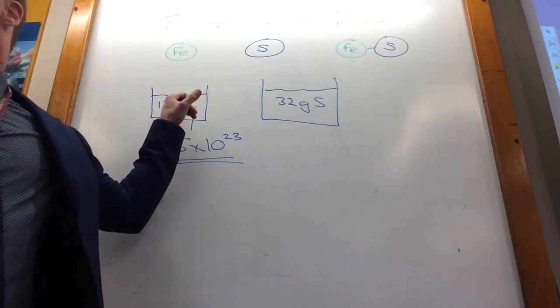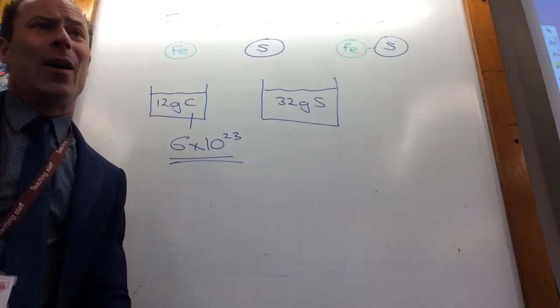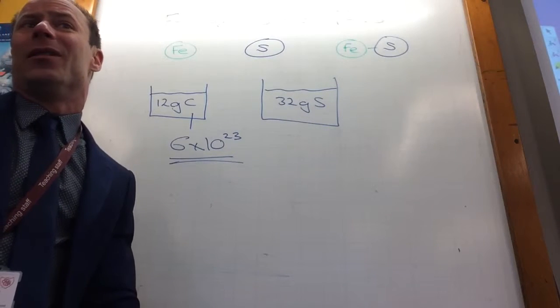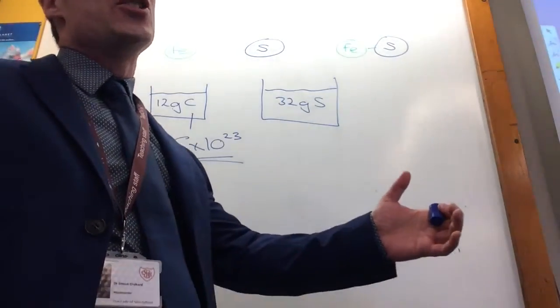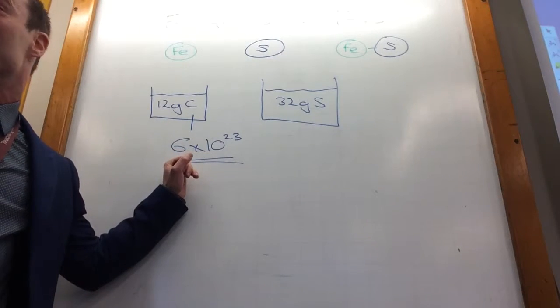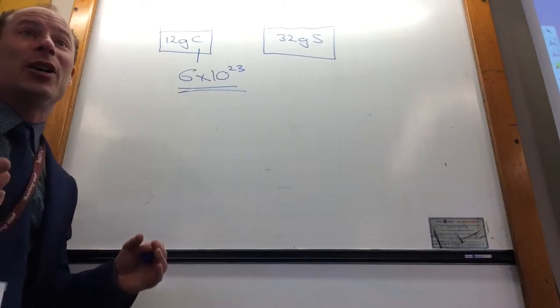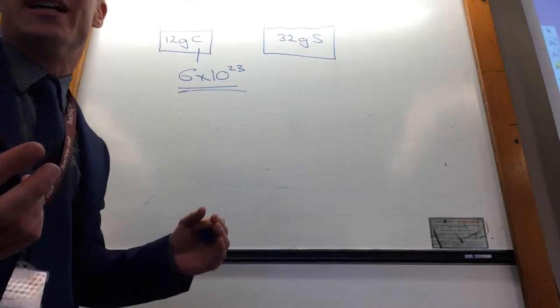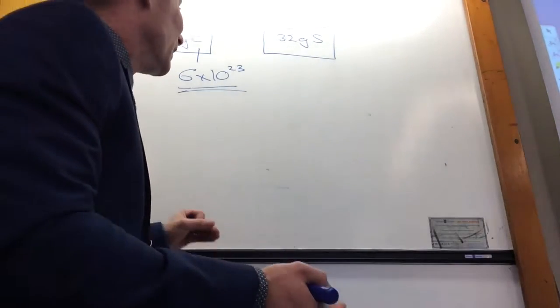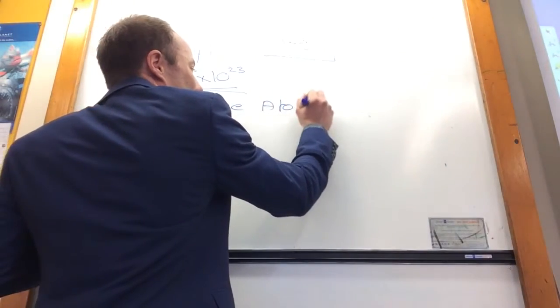So it's just a really big number. Where would you find that number? If I said, can you go and weigh out 6 times 10 to 23 atoms of carbon, where would you look to find out how much you need to weigh out? What key tool do we always use? We'd always use the periodic table. And that number is called the relative atomic mass. So the relative atomic mass tells you how much a mole of atoms weighs. So you always look at the periodic table for the relative atomic mass.